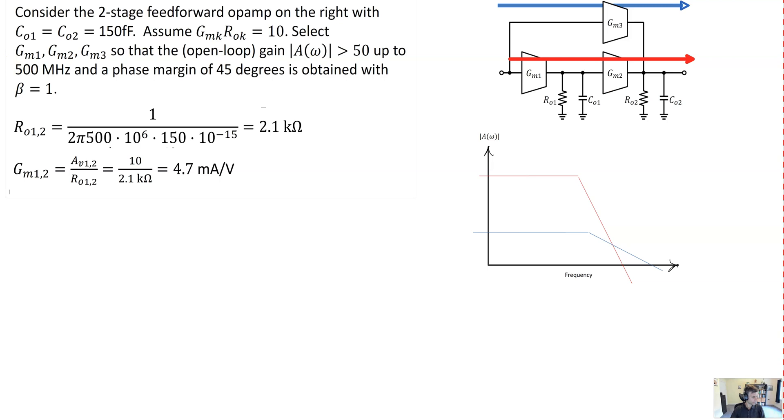So if we use this expression here for the location of the zero as a function of the gains of each of the stages, we see that we can relate the zero-frequency to the gains and to the pole frequency. The first pole frequencies through the red path are both located at 500 megahertz. We know that DC gain AV1 times AV2 is equal to 100. So we can now calculate what we need AV3 to be, and from that infer what GM3 needs to be.